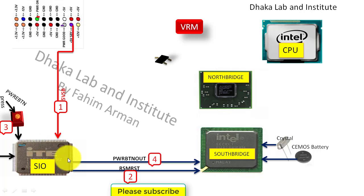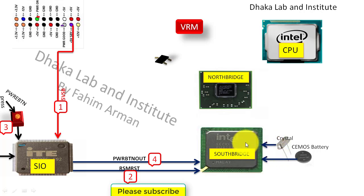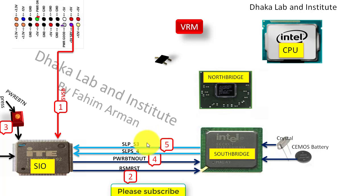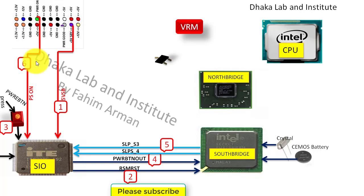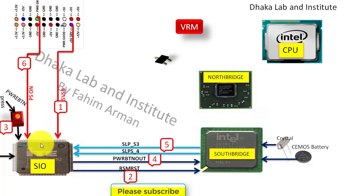When you press the power button, IO will get the power button signal and pass the power button out signal to the South Bridge. After having all the frequencies and voltages, the South Bridge will pass SLPS3 and SLPS4 signals to IO. Then you can see the green wire — there will be 5V on it. When the power button is pressed, the voltage on this green wire will go low, and that low signal goes into the IO chip, which then activates all the voltages: 3.3V, 5V, and 12V.